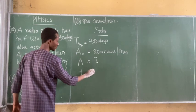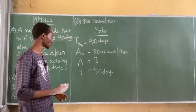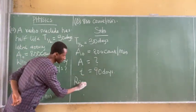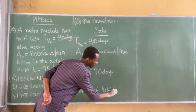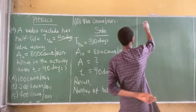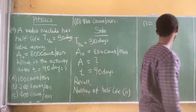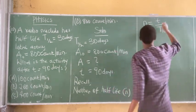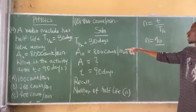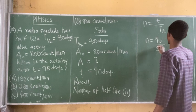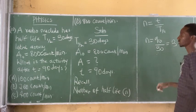The time T is given as 90 days. Recall that the number of half-lives N equals T over T-half. So N equals 90 days divided by 30 days, which gives us 3. We now have N equal to 3.